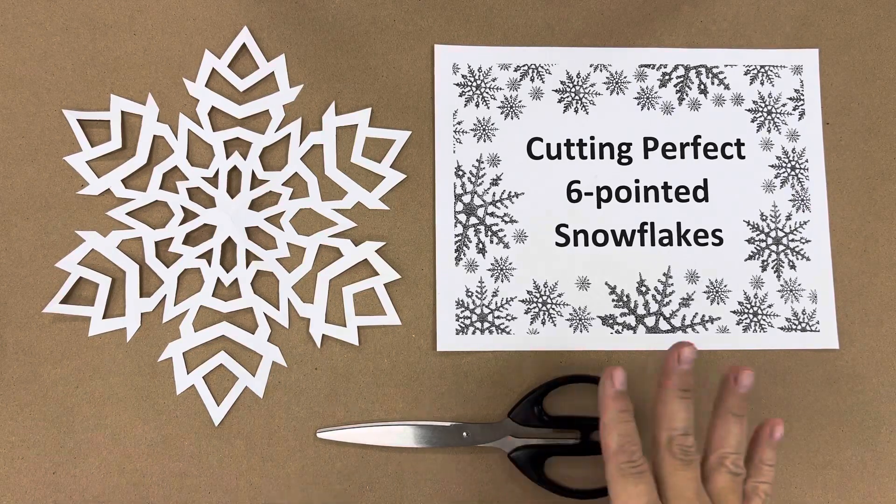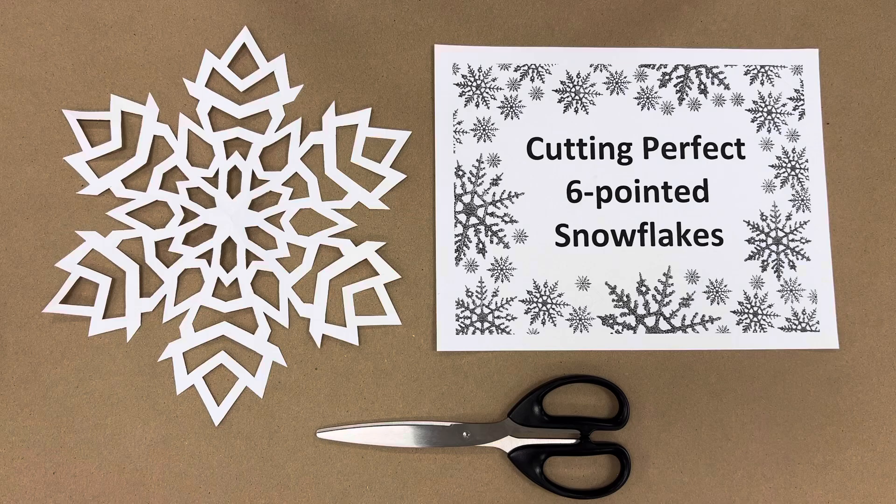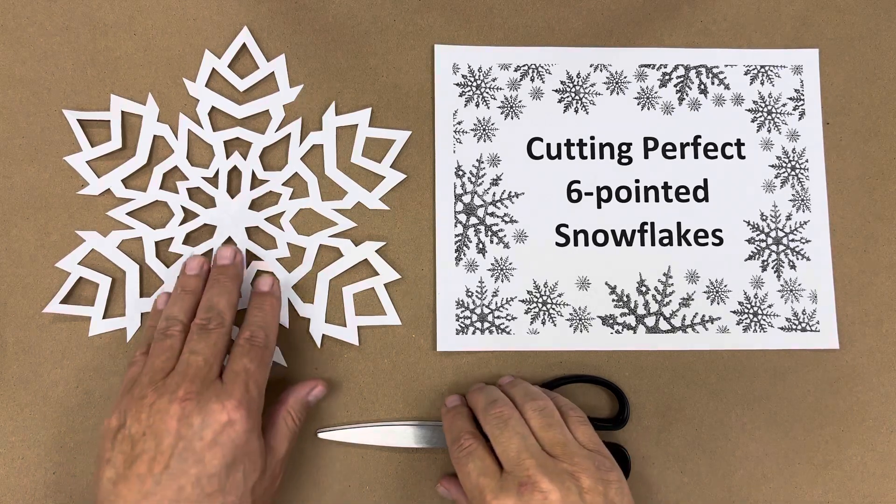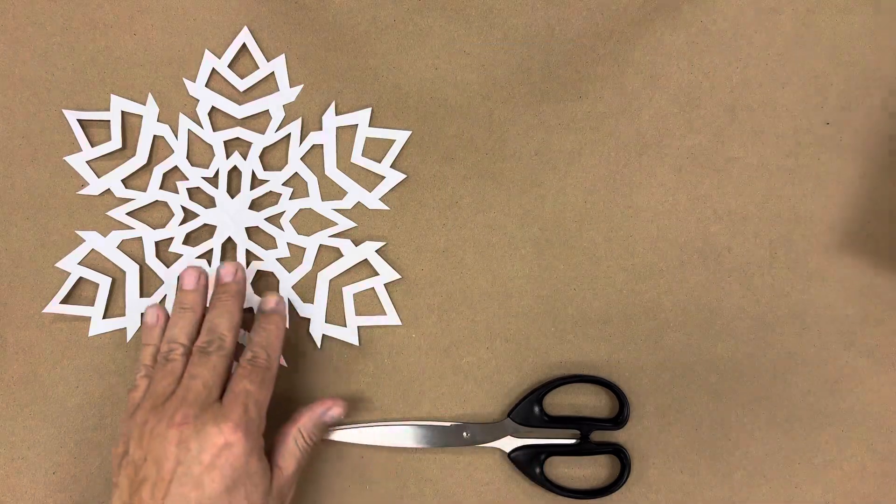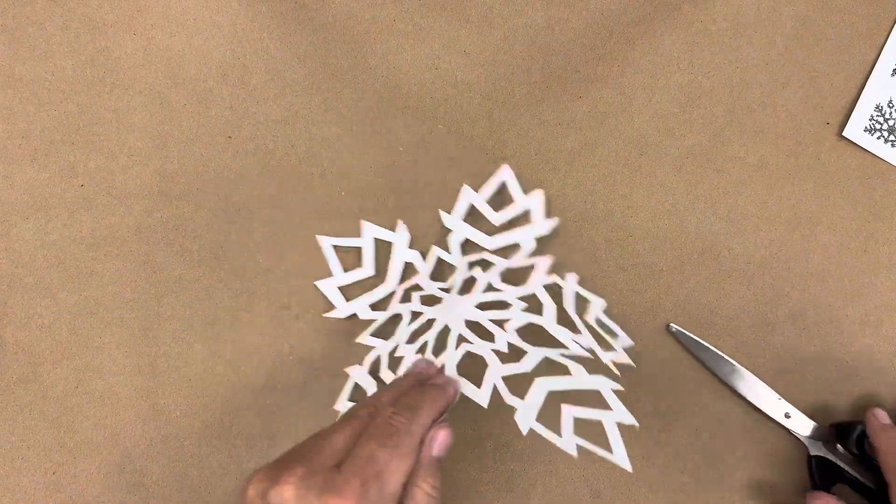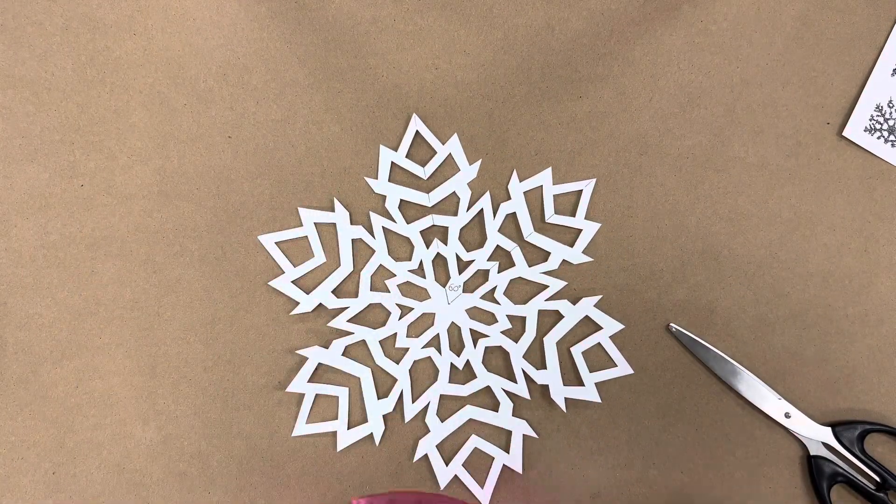Some people struggle with cutting out perfect six-pointed snowflakes, but I'm going to show you an easy way that you can do this yourself. So all you're going to need is a scissor and some paper, but let's take a look at a snowflake and see why it is a little difficult for people.